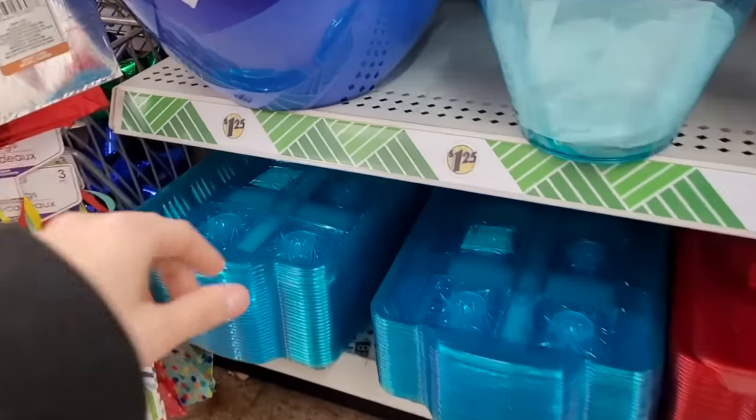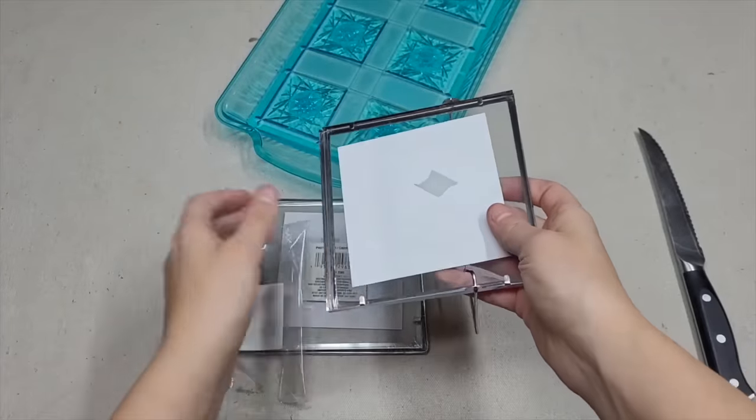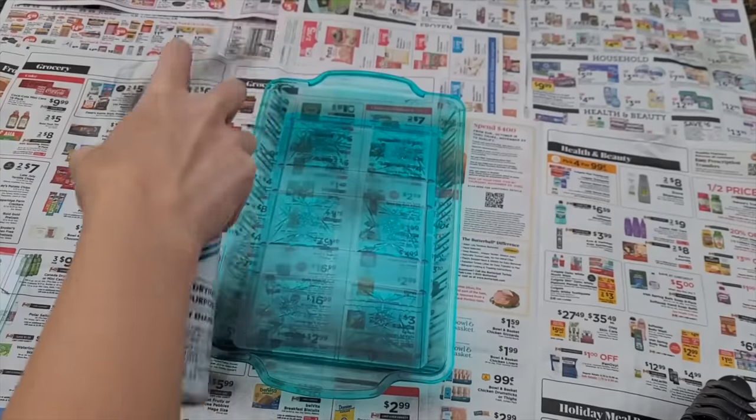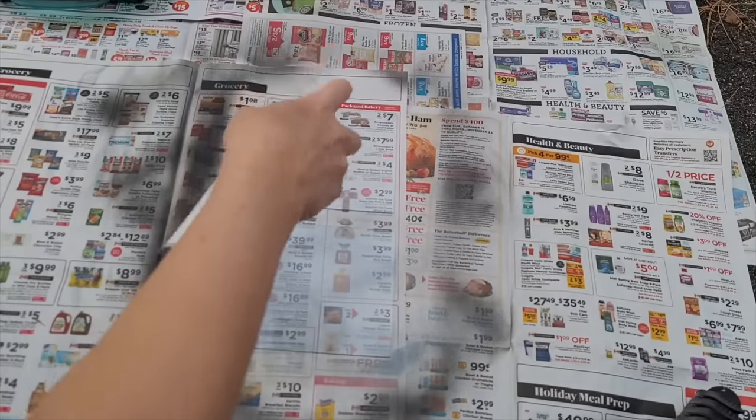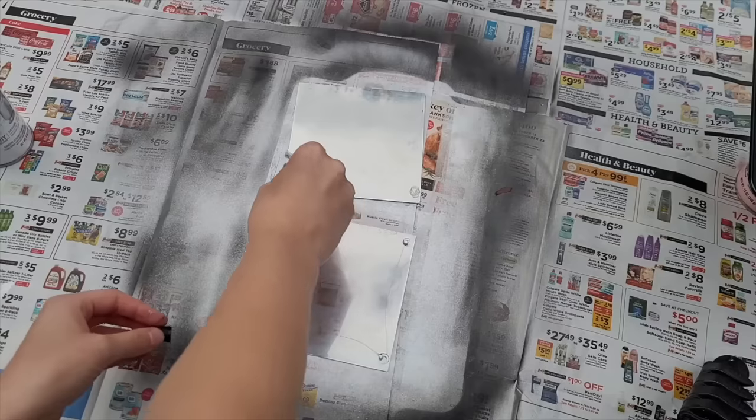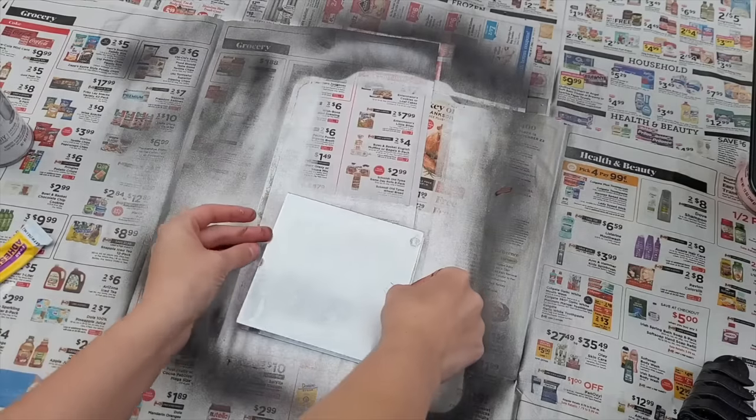Head over to the dollar store and grab one of these plastic trays. Now we're going to open up our little picture frames. Take everything outside to spray paint it. As that first layer dries, we can use some of this looking glass spray paint. Now we can put some glue onto the sides of these pans and stick them together.